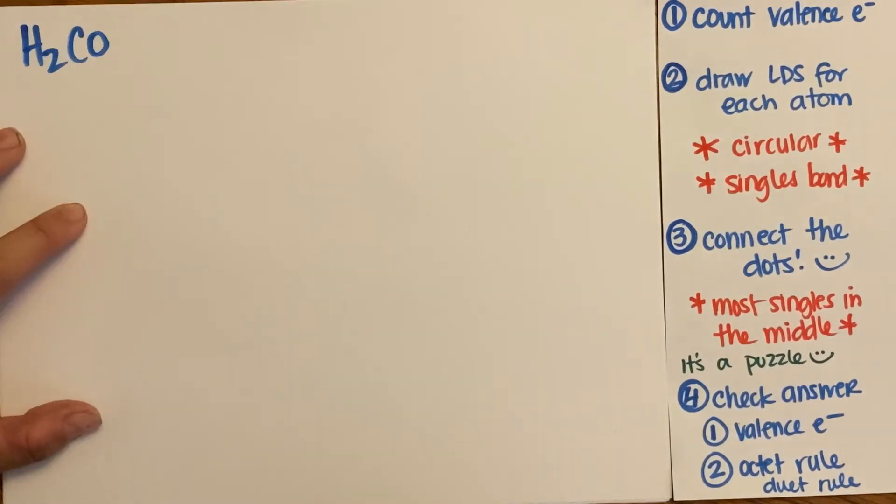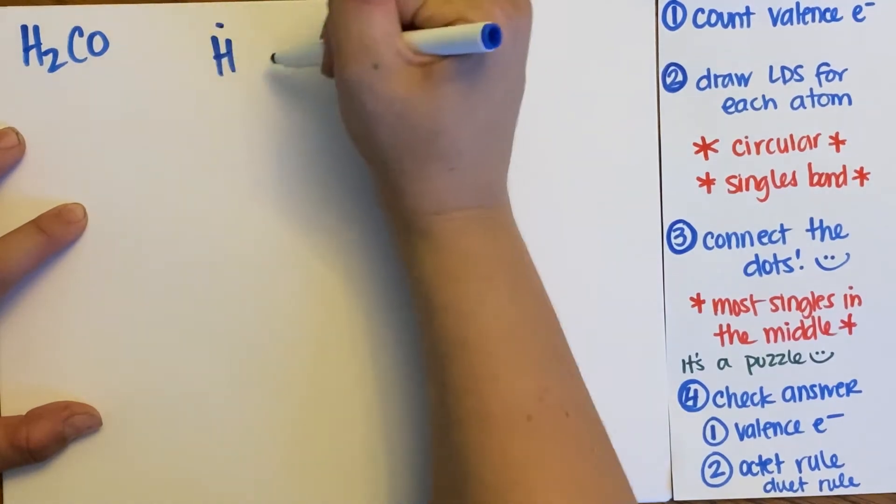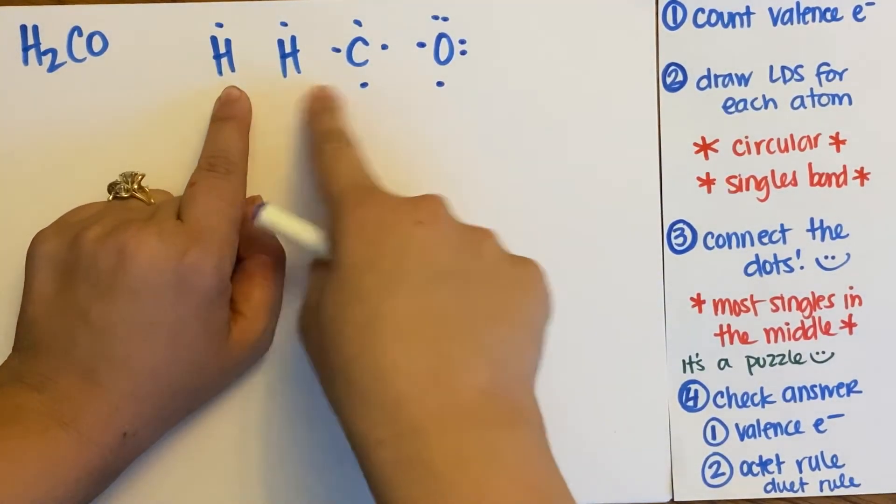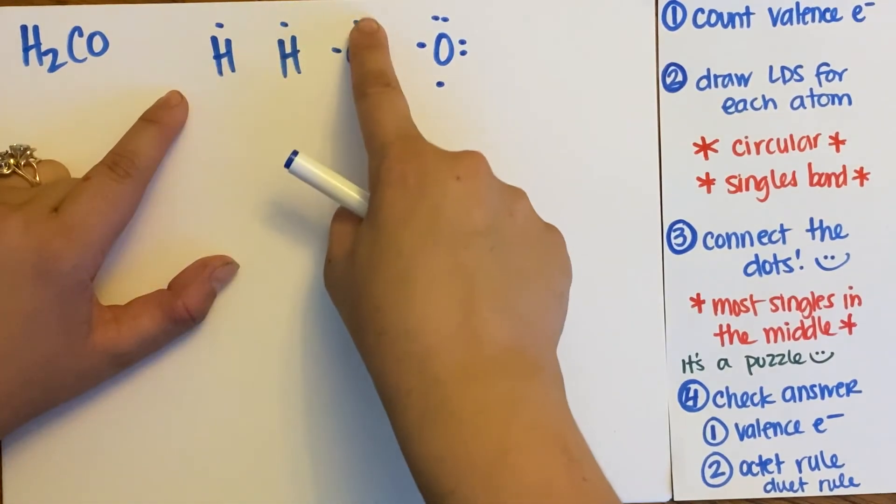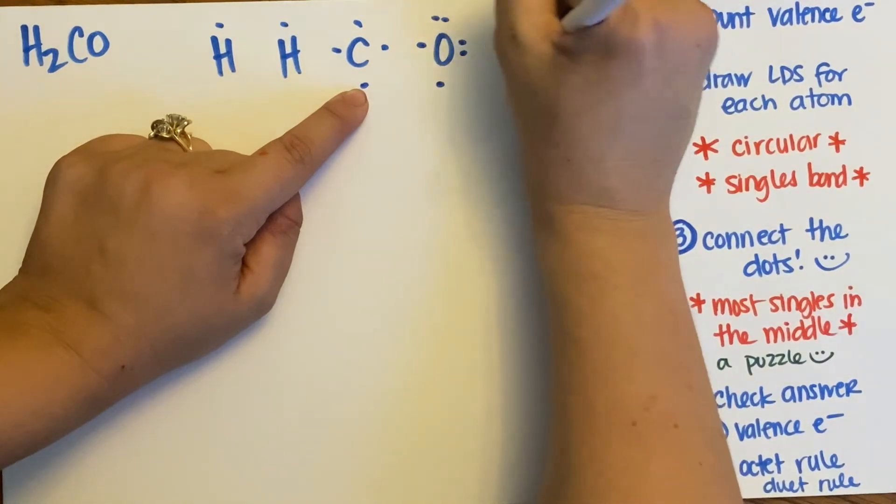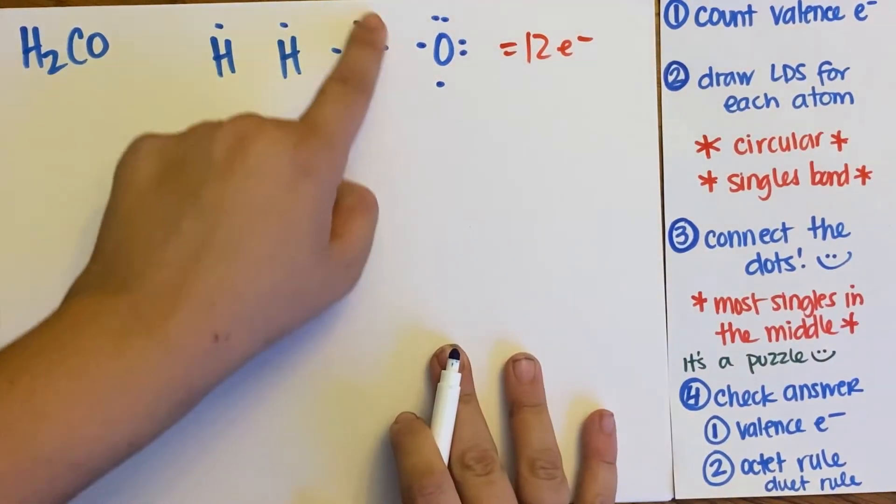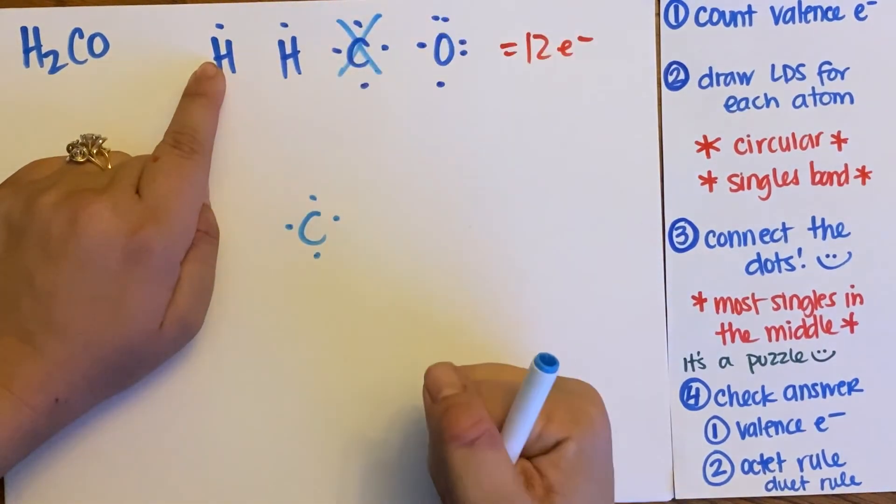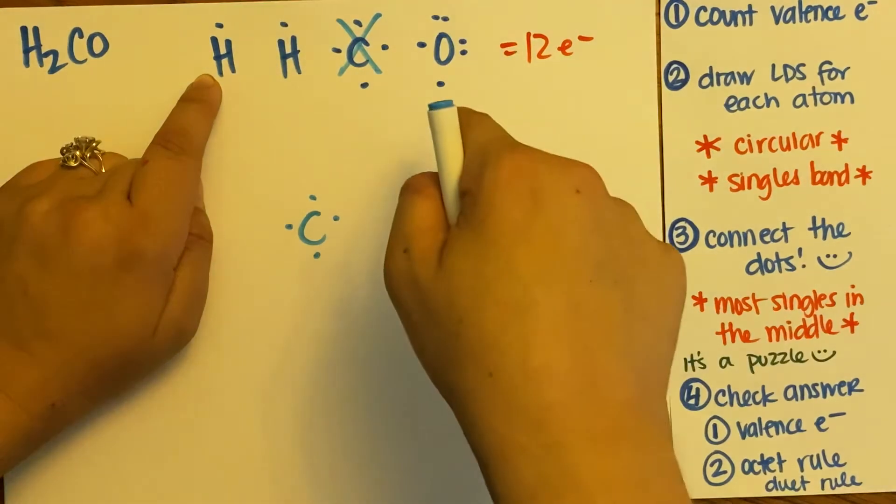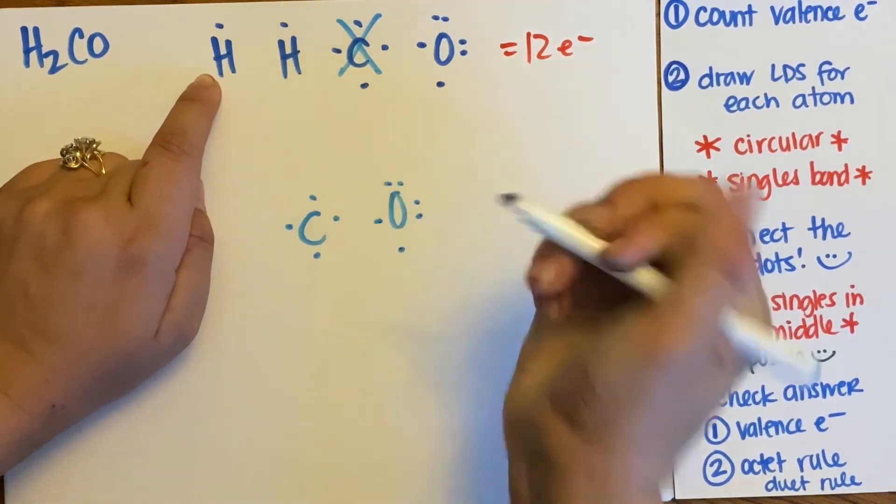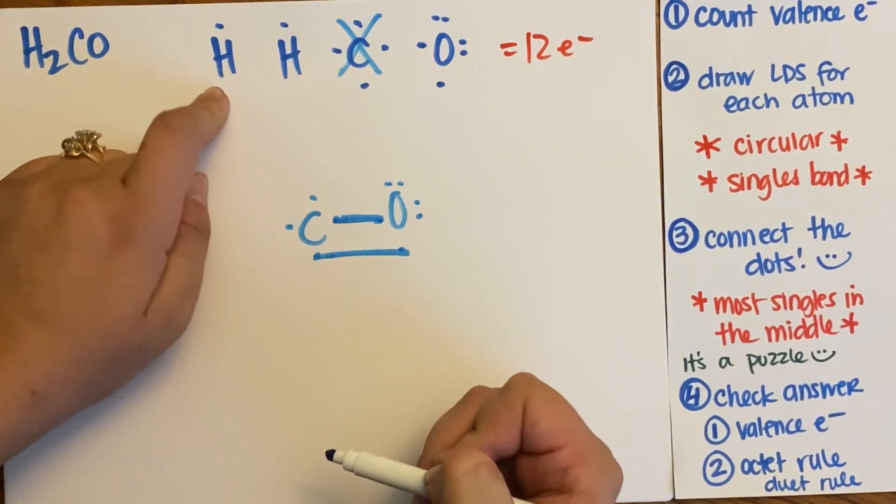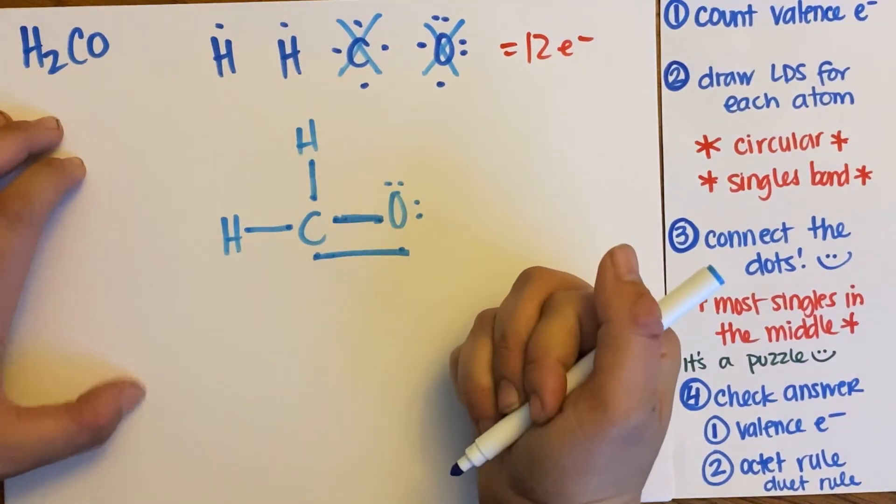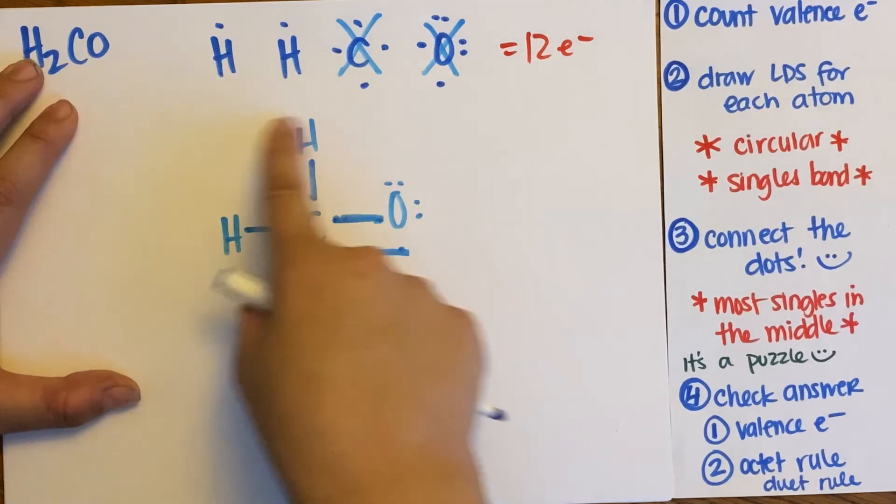If I did H₂CO, count up my valence. We'll just draw a valence electrons. I can hear my daughter waking up from nap, so we'll go speedy. So one, two, that's six, plus six is 12. Most singles in the middle. This carbon has four singles, so he goes in the middle. Then I have some options. I did that guy. Now some options. So I pick hydrogen or oxygen. Pick the guy who has the next most singles. That's this guy. Connect your singles. Now I've got these two hydrogens still to go.